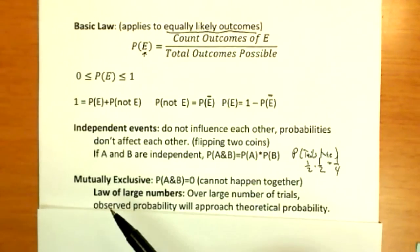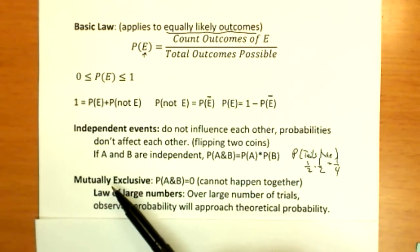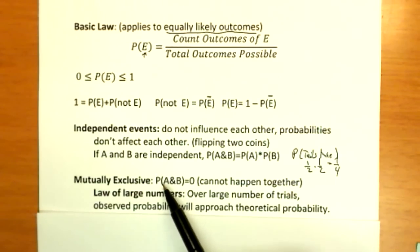Okay. Mutually exclusive means what it sounds like. They exclude each other. They cannot happen at the same time. This means probability of A and B happening together is zero. It is impossible for them to happen together.